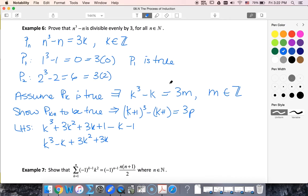Now I'm going to use my statement. So I'm going to replace k³ - k with 3m + 3k² + 3k. That's equal to 3 times (m + k² + k). I know that this is an integer because m is an integer and k is also an integer.